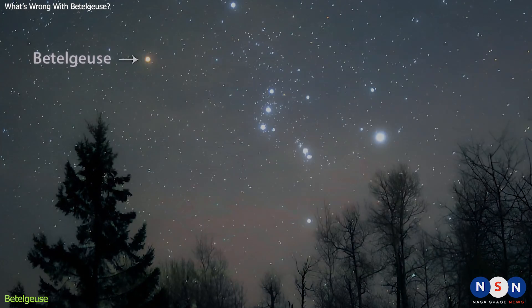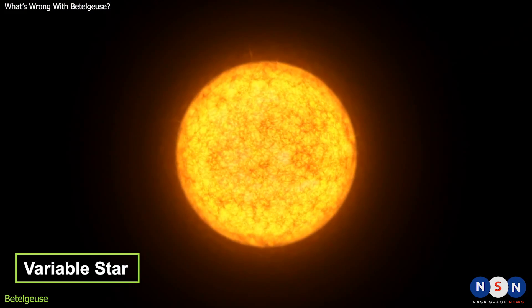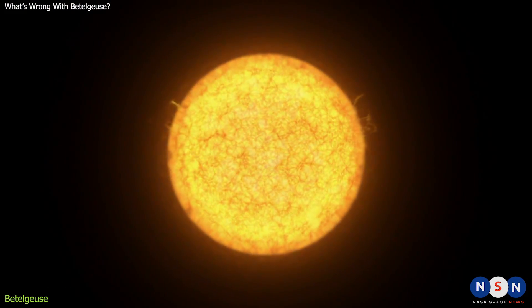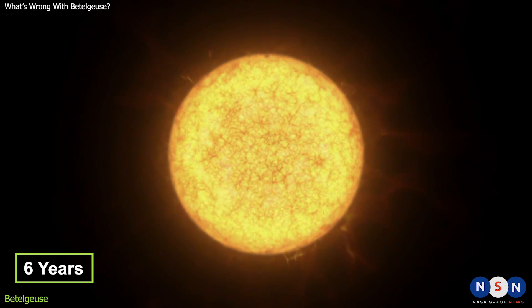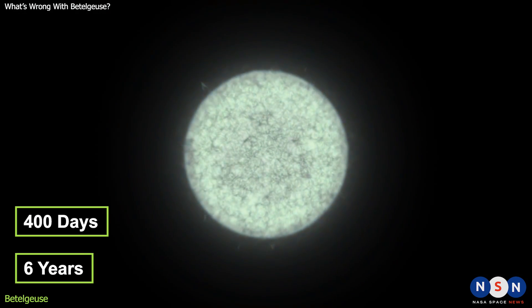But Betelgeuse is also a mystery. It's a variable star, which means its brightness changes over time. And it has two main cycles, one that lasts about six years and another that lasts about 400 days.